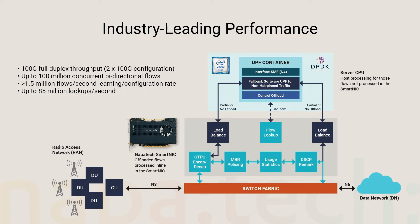Using a single 200GB SmartNIC to sustain 100GB of full duplex traffic, this solution processes up to 100 million concurrent bidirectional flows and achieves a total throughput of up to 85 million packets per second, which ensures full wire speed operation for typical packet sizes.